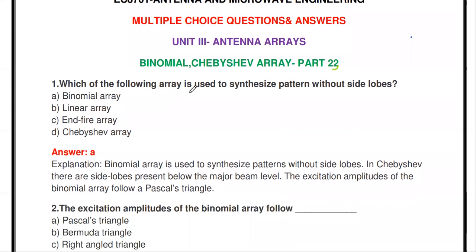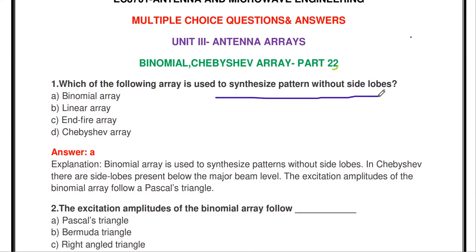The first question: which of the following arrays is used to synthesize a pattern without side lobes? The binomial array is used to synthesize the pattern without side lobes. In the remaining arrays, side lobes are present.